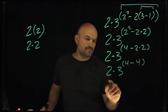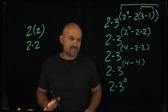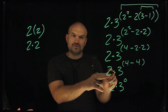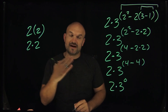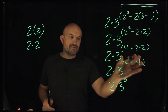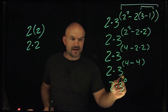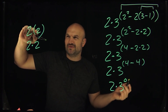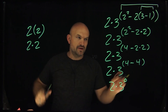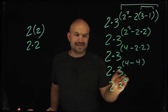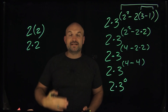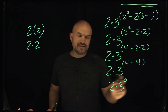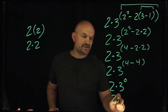A common mistake students make is thinking they should multiply before subtracting here, but following order of operations we simplify everything inside the parentheses first. Four minus four gives us zero, so I drop the parentheses. Now we have three to the zero power, which equals one. That leaves us with two times one.